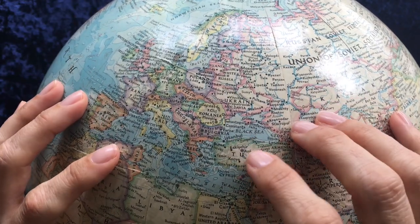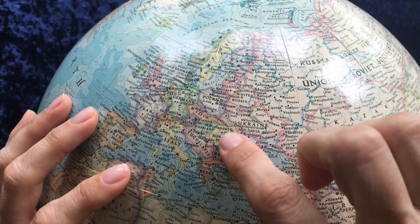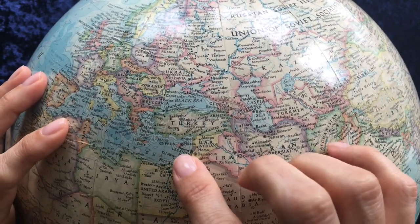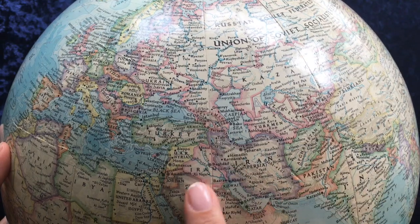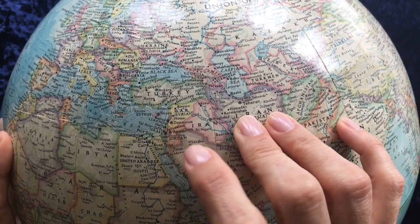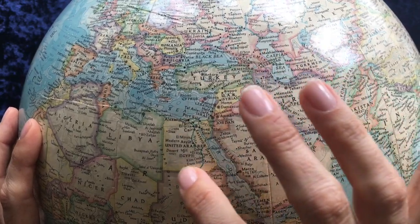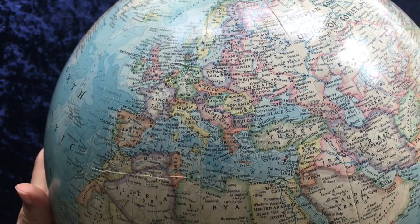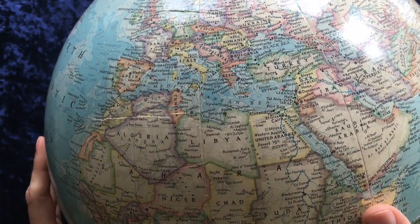And then we've got Romania, Bulgaria, Greece, Cyprus, Turkey, Israel, Jordan, Suez Sinai, the United Arab Republic, or Egypt. So a lot of things have changed in 60 years.